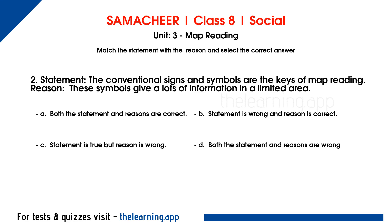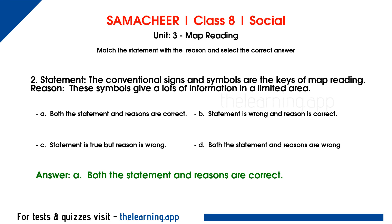Question 2: Statement: The conventional signs and symbols are the keys of map reading. Reason: These symbols give a lot of information in a limited area. Options are a. Both the statement and reasons are correct, b. Statement is wrong and reason is correct, c. Statement is true but reason is wrong, d. Both the statement and reasons are wrong. Correct answer is a. Both the statement and reasons are correct.